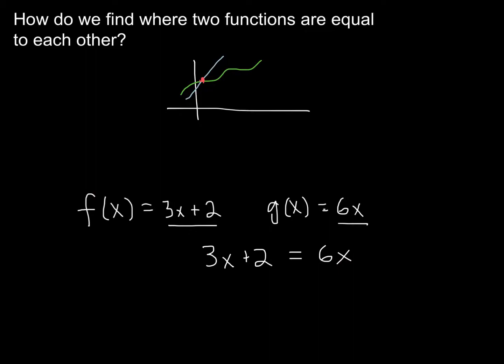All right, so hopefully that went well. If you solve this, I'm not going to go through the whole thing, but you'd subtract 3x from both sides and then divide by 3, and you'd end up finding that x is equivalent to 2/3. Nothing too crazy, right? Inverse operations, isolating the variable.